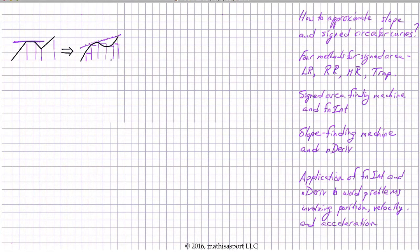And so the real issue became, how can we approximate the slope and the signed area for more complex shapes?